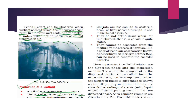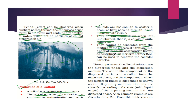Continuing with the properties of colloids: colloids are big enough to scatter a beam of light passing through them, making its path visible. They do not settle down when left undisturbed, unlike suspensions — so a colloid is quite stable. Colloids cannot be separated from a mixture by the process of filtration. Instead, a special technique called centrifugation is used to separate colloidal particles. You will study centrifugation in detail in higher classes.